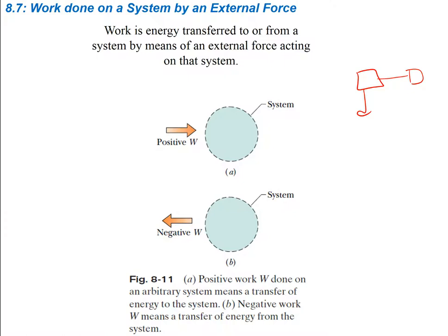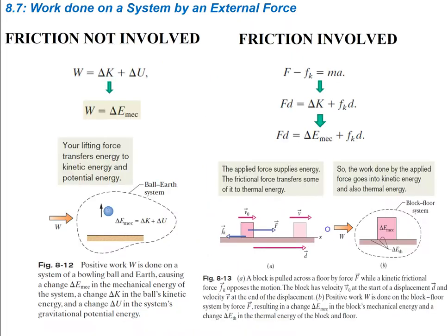When you do positive work to a system — to a group of objects — you're giving those objects energy, so you're going to increase the amount of energy the objects have. Positive work increases the amount of energy. If you do negative work to a system, you're going to decrease the amount of energy that the system has. Work is equal to the change in kinetic energy plus the change in potential energy, so work is equal to the change in mechanical energy.